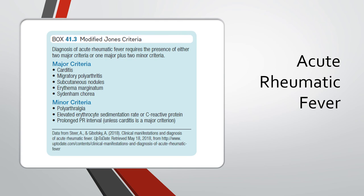Acute rheumatic fever is a delayed outcome of group A streptococcal pharyngeal infection. It usually develops two to four weeks after the initial strep infection. The child can develop an antibody response to the proteins of the bacteria, and these antibodies cross-react with antigens in the cardiac muscle, causing carditis and arthritis. Nursing management includes ensuring compliance with antibiotics and prophylaxis following initial recovery, and offering support for discomfort by administering corticosteroids or NSAIDs for joint pain and swelling. The major and minor criteria for acute rheumatic fever are shown on the slide.